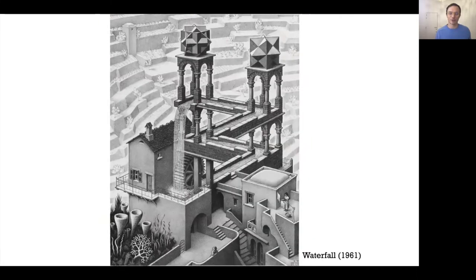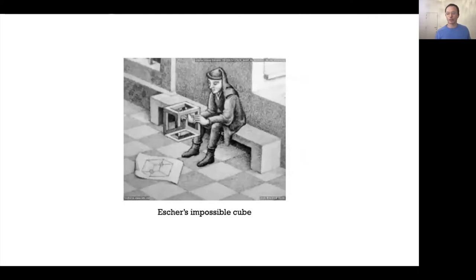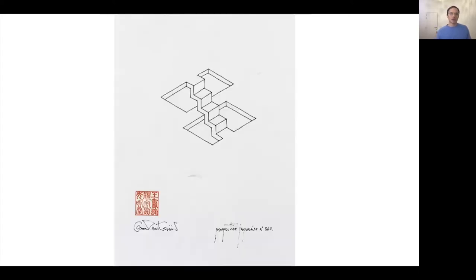Other figures that were included in the publication include these linked impossible triangles and these impossible stairs. Since this was really the first appearance of these in the academic literature, the impossible triangle has come to be known as the Penrose triangle, and the impossible stairs have come to be known as the Penrose stairs, despite Reutersvärd's priority. The stairs are based on the same geometric principle as the triangle.